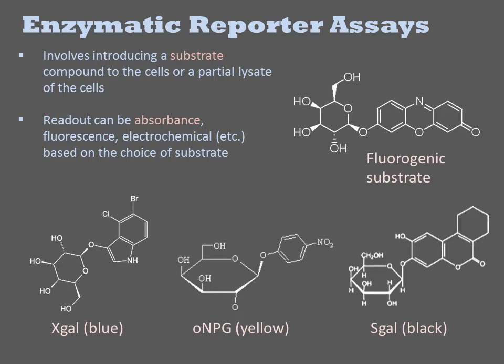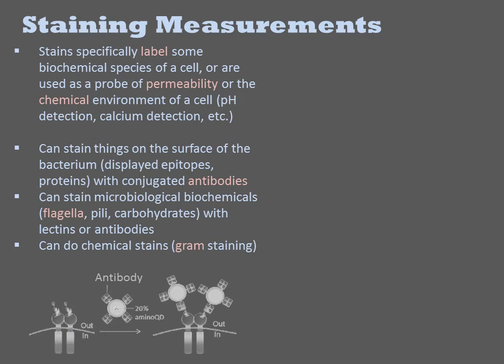I highlight the enzymatic assays because they are commonly used, and there are many of them. There are assays for monitoring MAP kinases, for monitoring calcium concentrations, for watching protein-protein interactions, amongst many other things. Another type of biochemical assay involves stains, which specifically label some biochemical species of a cell or are used as a probe of permeability or the chemical environment of a cell. That could include pH detection or calcium detection and so forth.